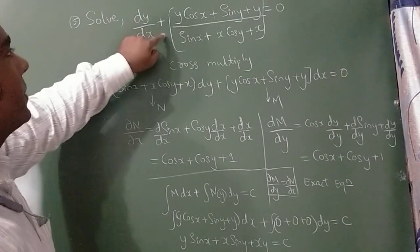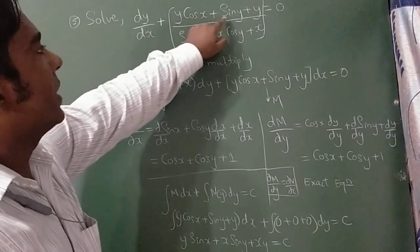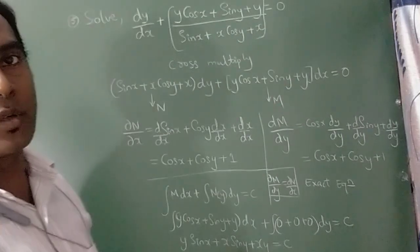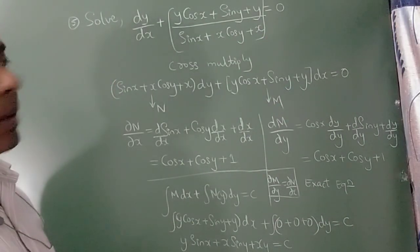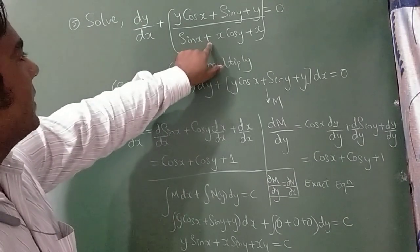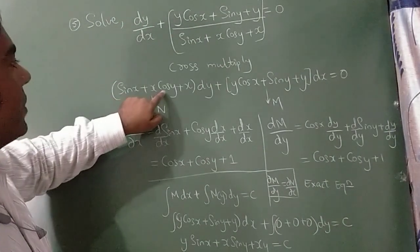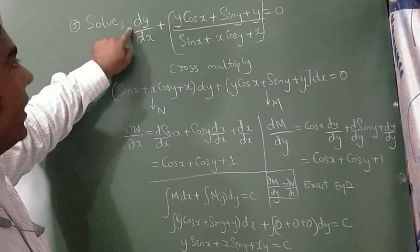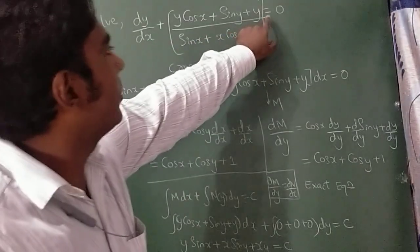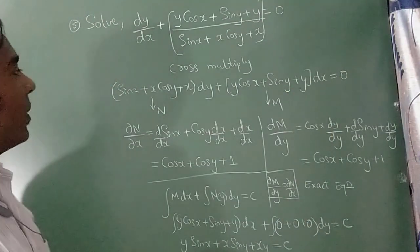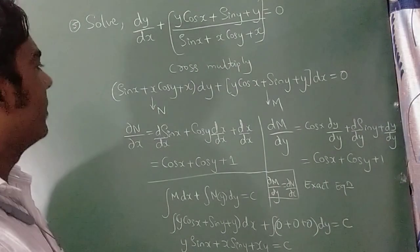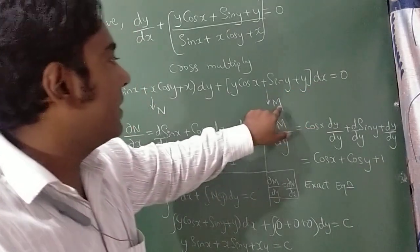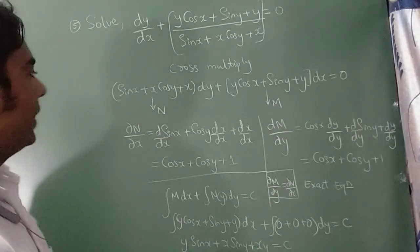Question 5: Solve dy/dx + (y·cos x + sin y + y)/(sin x + x·cos y + x) = 0. This is not in standard form, so I cross-multiply to get: (y cos x + sin y + y) dx + (sin x + x cos y + x) dy = 0. Here M = y cos x + sin y + y and N = sin x + x cos y + x.